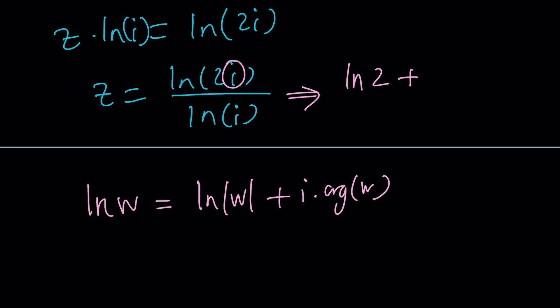ln of the modulus, plus i has pi over 2. So we can kind of write it like this. And then at the bottom, we have the ln i, which is i times pi over 2. Great.